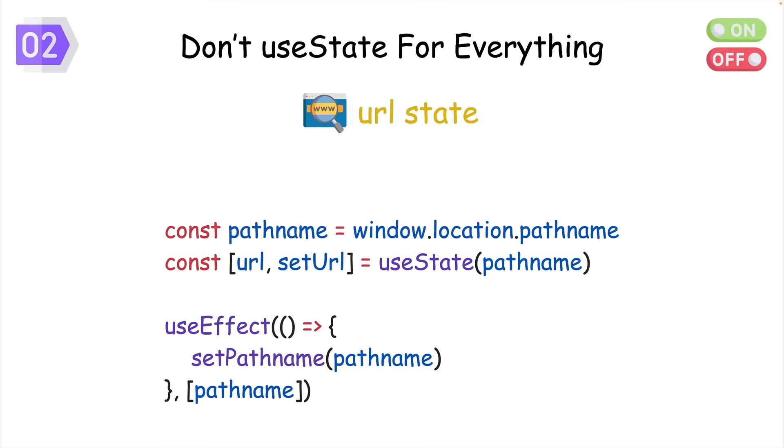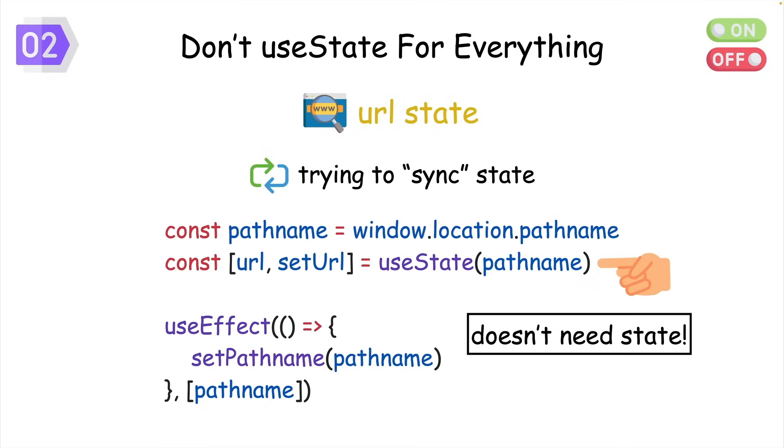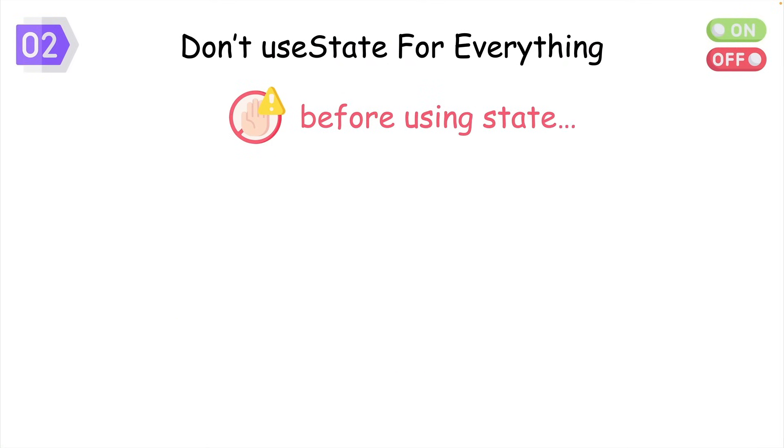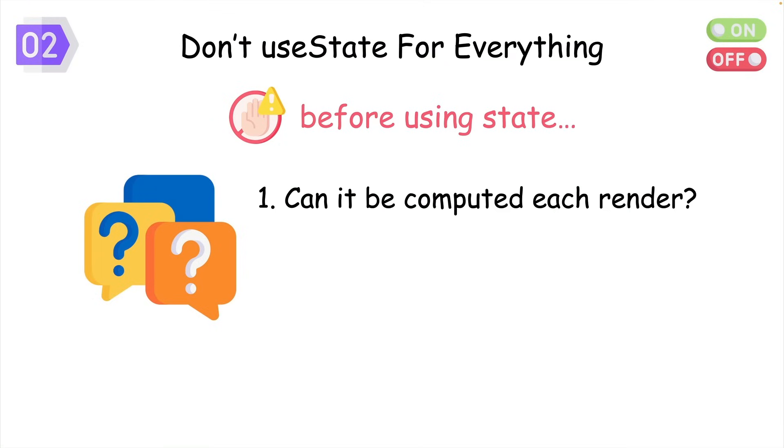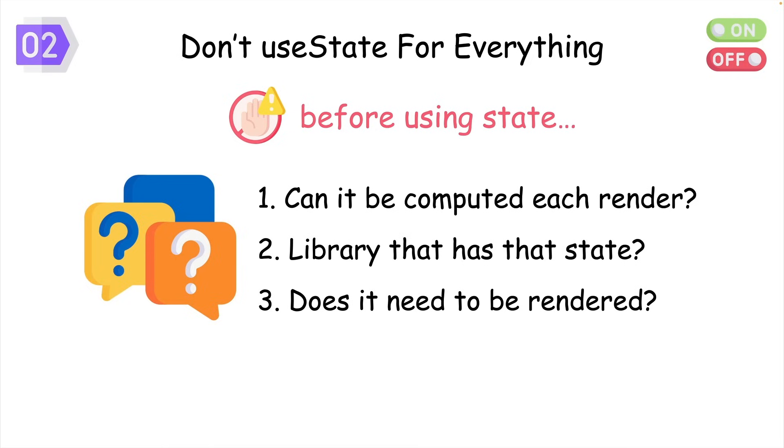Notice that we're using useEffect to try to synchronize some state. But when you know what doesn't need to live in state, you can get rid of useEffect entirely. So before you reach for a state hook, just go through this simple checklist. Is this a simple value that can be computed each render? Is there a library in my app that's already holding this state? Does it need to be rendered? And if the answer to all these is no, then you can consider putting that data in state.